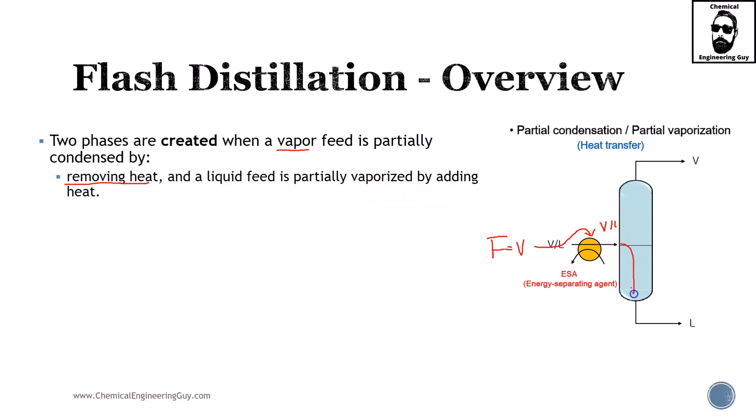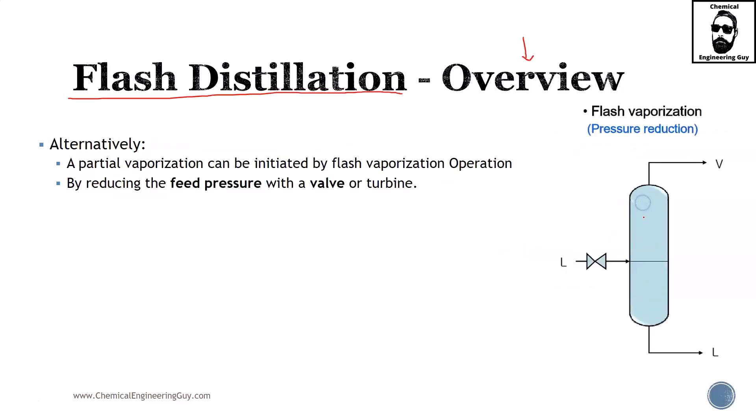The idea is of course liquid falls down due to gravity, vapor goes upwards. Alternatively, a partial vaporization can be initiated by flash vaporization by reducing feed pressure with a valve. So this is interesting. As stated before, we can use either a chiller or heater, or you can use a valve or pressurizer. Of course if you're using a pressurizer, most likely you're going to be forming a liquid. If you're using a valve, most likely you're producing a vapor. If you have a liquid which is near its bubble point, then getting it full throttle in this valve, you will have vaporization.